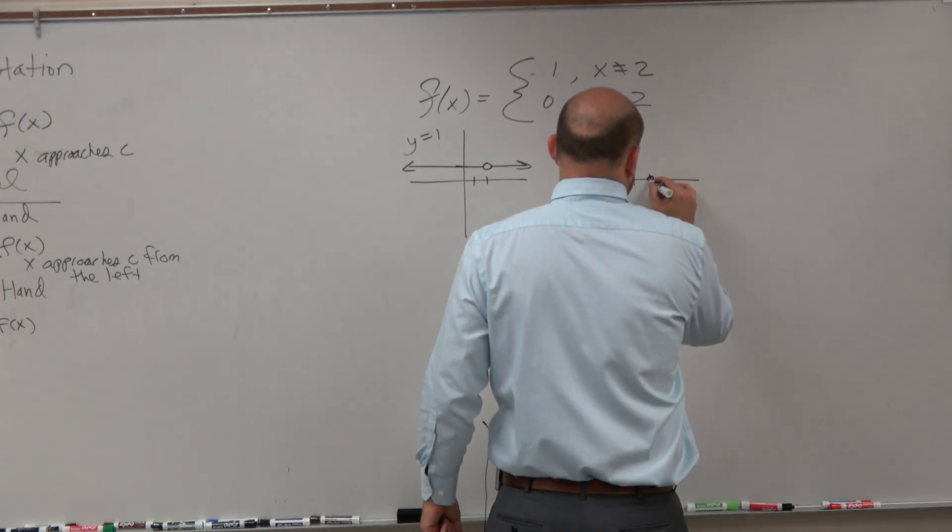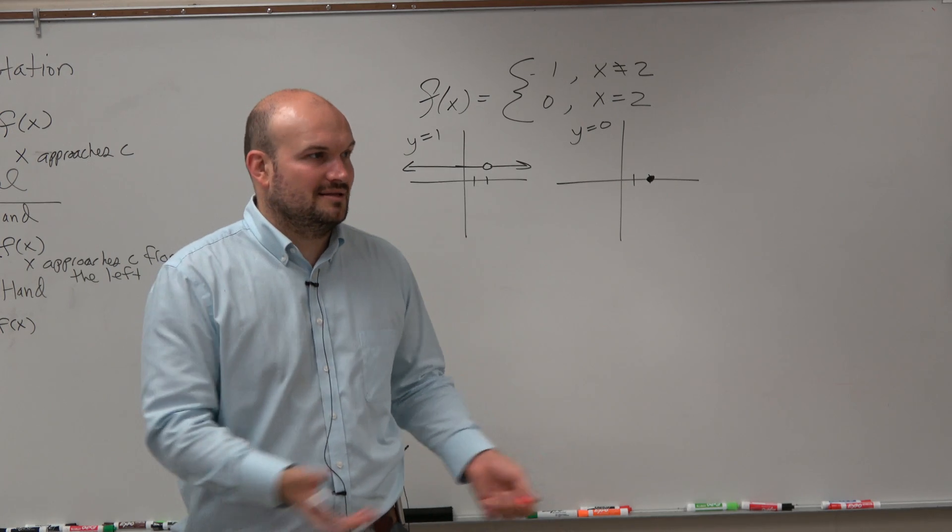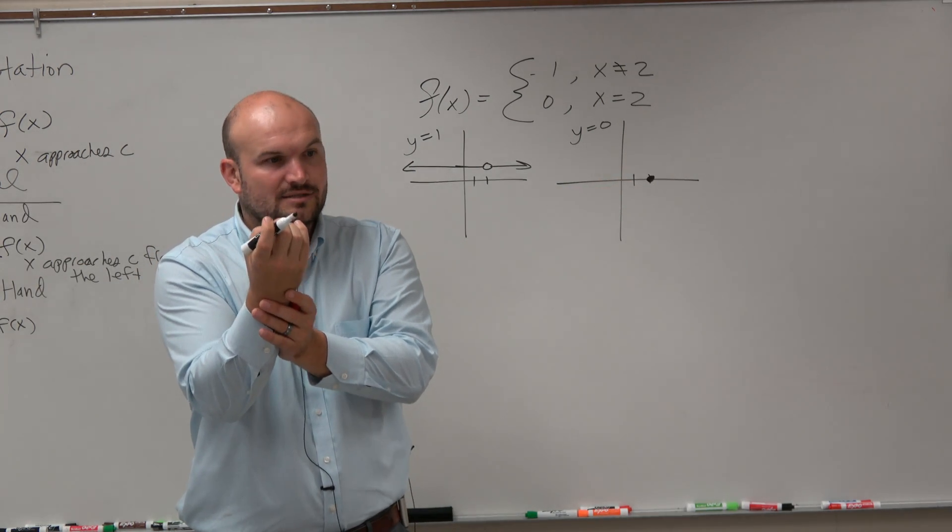So if x is only equal to 2, that means to represent that, we're just going to have to represent that with a dot. Because literally we took everything away from the line and just only equal it when x is equal to 2.